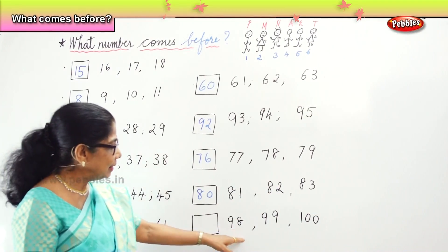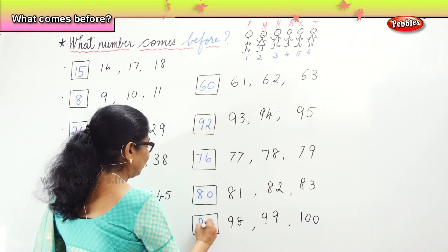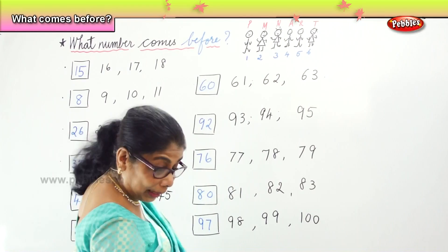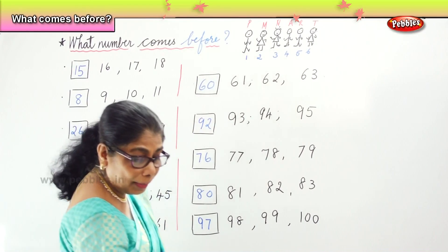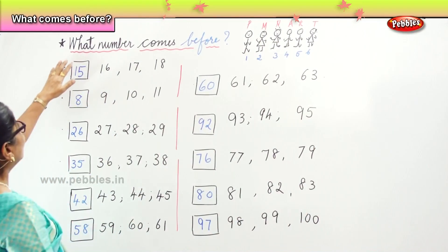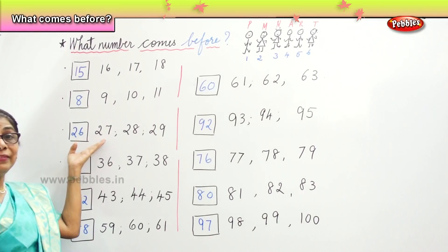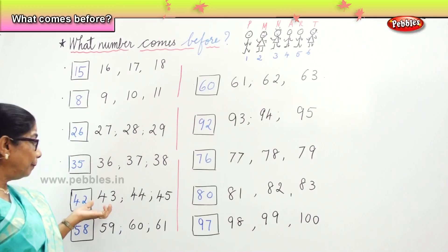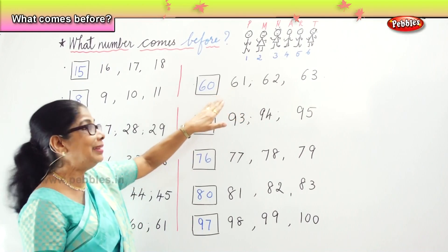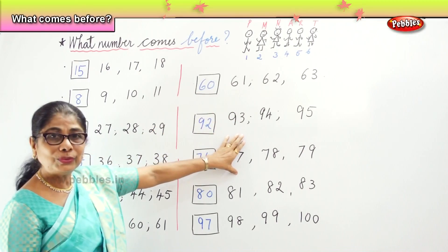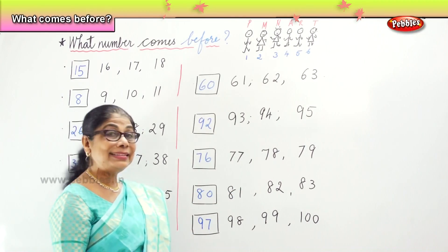Last one: 98, 99, 100. So what number comes before 98? 97. Very good. Now let us look at the number pattern here. So we are done with the exercise to help us remember the numeral. Before 16? 15. Before 9? 8. Before 27? 26. Before 36? 35. Before 43? 42. Before 59? 58. Before 61? 60. Before 93? 92. Before 77? 76. Before 81? 80. And before 98? 97. Very good.